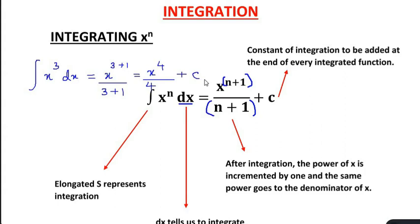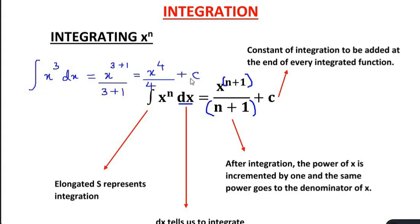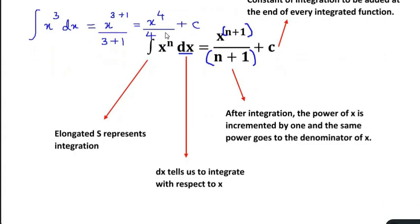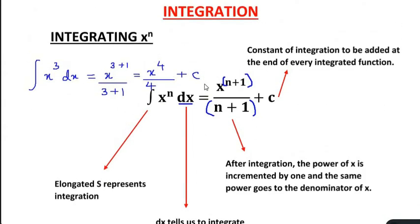C can take any number — positive, negative, decimal, or fraction. This happens because this is an indefinite integral, meaning no limits are given. If limits like 3 and 6 were written, it would be a definite integral. Since no numbers are mentioned here, we call it an indefinite integral, and we write plus C at the end.